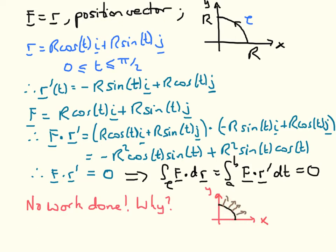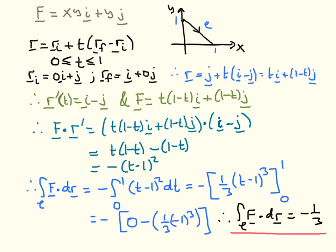With that, we can move on to the next question. In the final exercise in this podcast, we consider the same vector field F in both parts, with the same initial and final positions, but look at two different paths. On this slide, we go from the start to the end using a straight line.